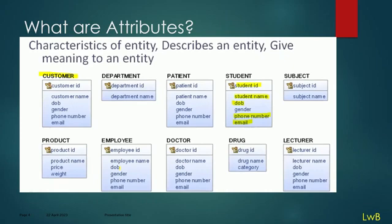What is important is that one of the attributes will be a primary key. The primary key is the identifier of that entity. For customer, customer ID is the primary key. For department, department ID is the primary key. For a doctor, doctor ID is the primary key. And we have non-primary keys like customer name, date of birth, gender, phone number, email, etc. In short, an attribute is the characteristic of an entity which describes it and gives identification, maybe using a primary key.